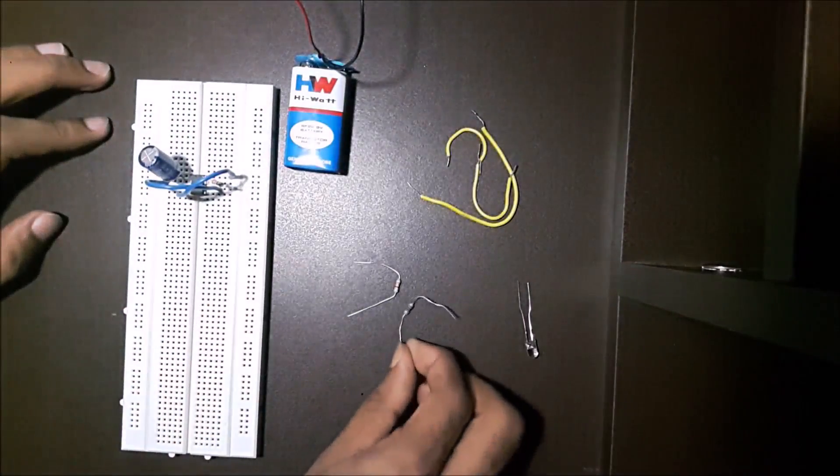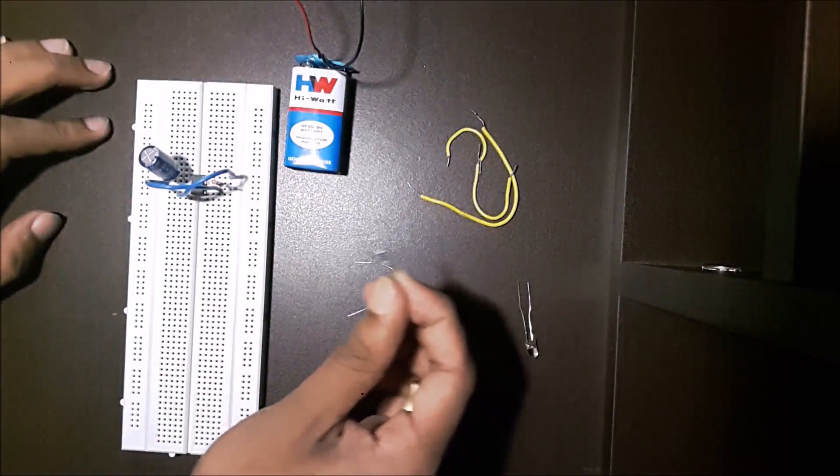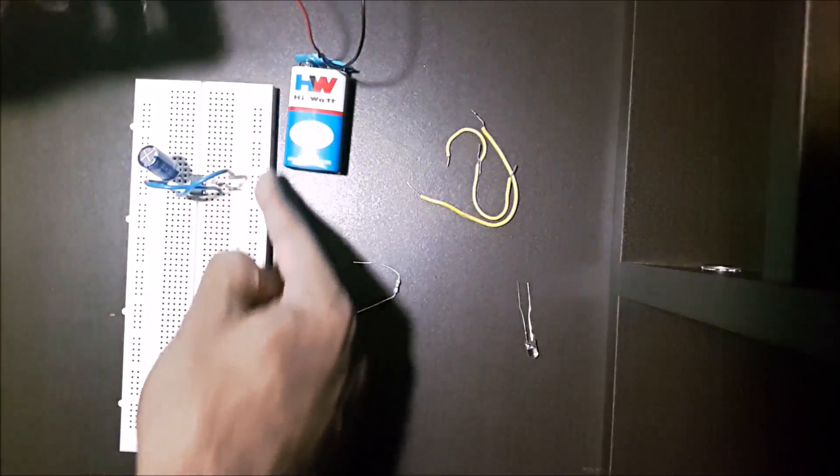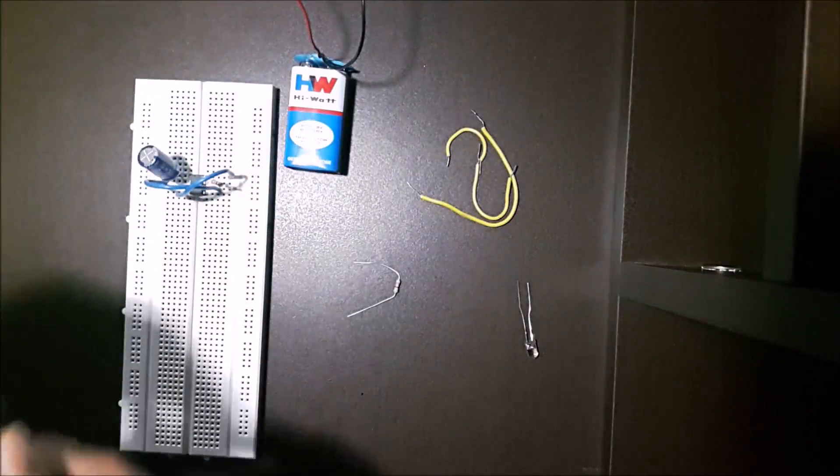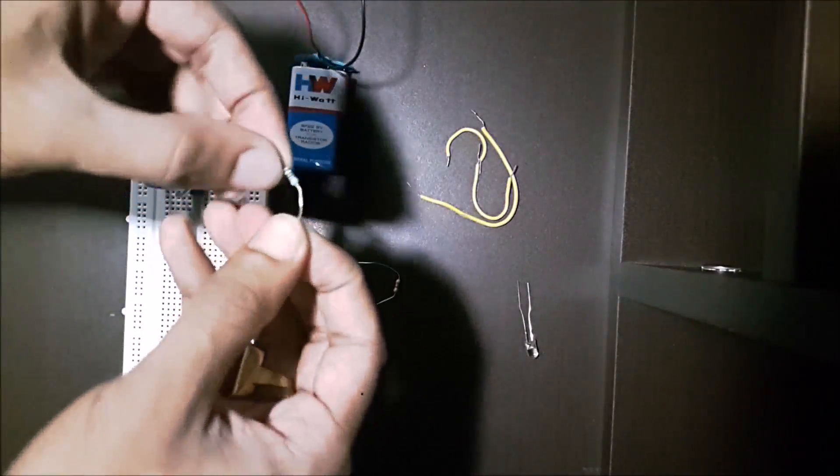Then connect an 820 ohm resistor between pin 7 and positive voltage. We'll take this strip as the positive voltage, so this resistor goes in between pin 7 and the positive voltage.